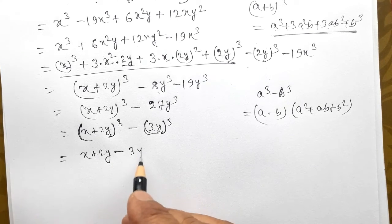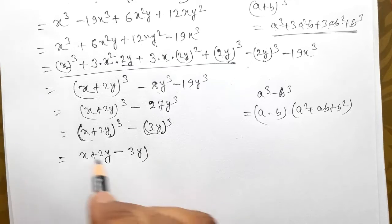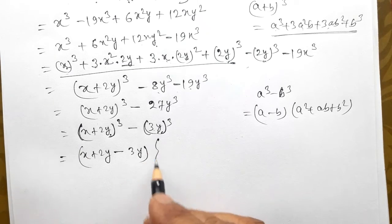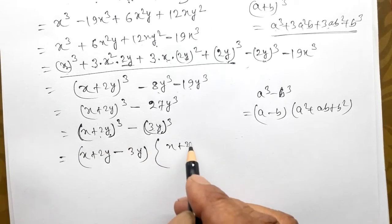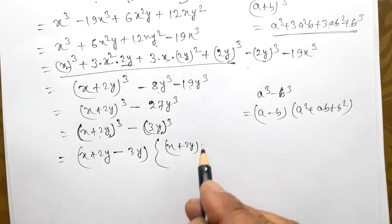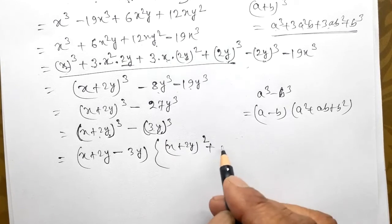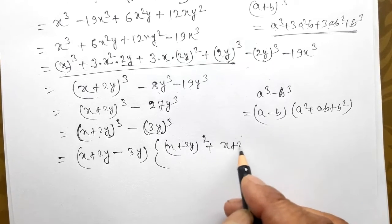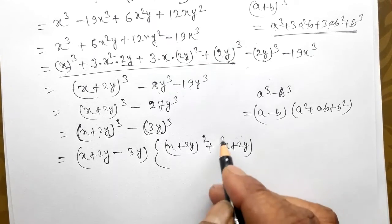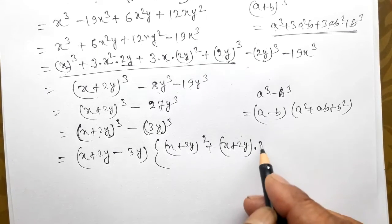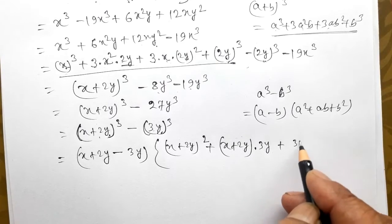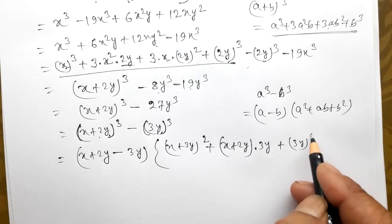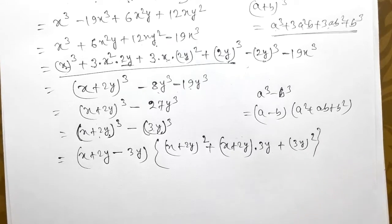A square. A square, x plus 2y, a square, plus AB — x plus 2y — A into B, 3y, plus B square, 3y, whole square.